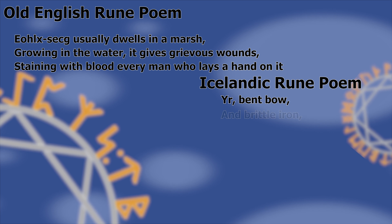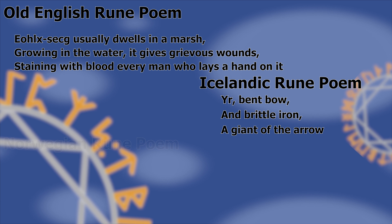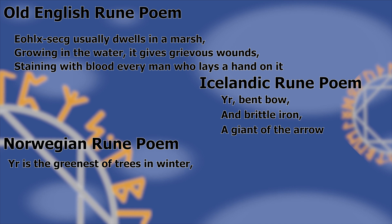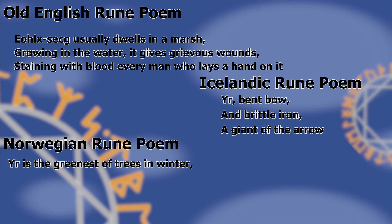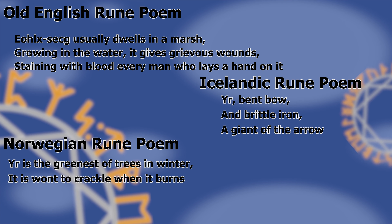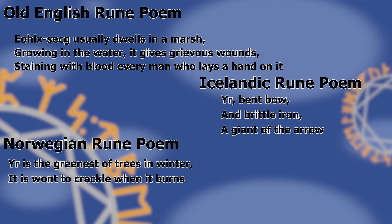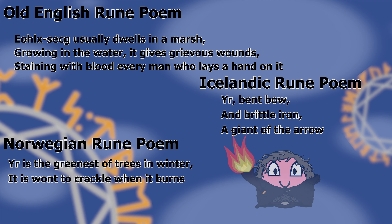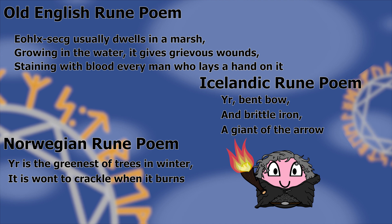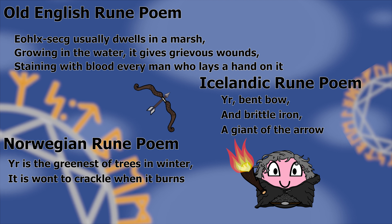The Old Icelandic rune poem says: Ør, bent bow, and brittle iron, a giant of the arrow. The Old Norwegian says: Ør is the greenest of trees in winter; it is wont to crackle when it burns. The Old Norwegian refers, like the Old English Æo rune, to the wood's usefulness in burning, and the Old Icelandic refers to the tree's usefulness for crafting bows and arrow shafts.